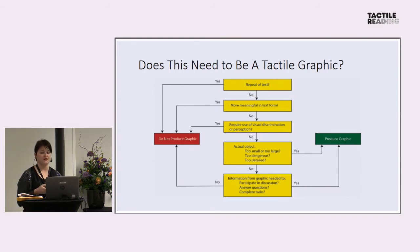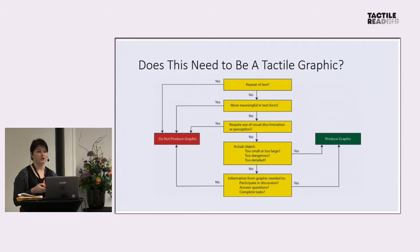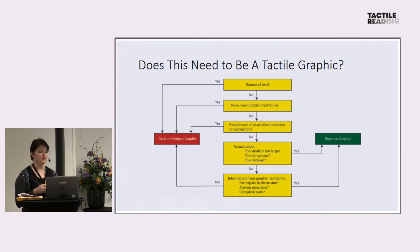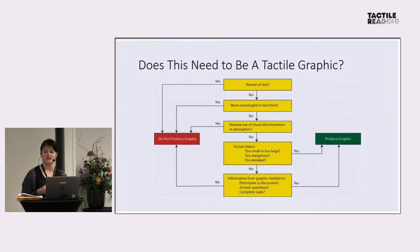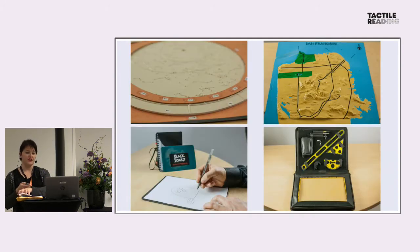There is a great flowchart from the Braille Authority of North America's guidelines and standards for tactile graphics. Not everything that appears as a graphic needs to be repeated as a tactile graphic. If the image repeats the text, is more meaningful in text form, or requires visual discrimination, perhaps you shouldn't produce a tactile graphic. However, if the actual object is too small, too large, too detailed, or too dangerous to handle directly, or if information from the graphic is needed to participate in discussion, complete tasks, or answer questions, then you definitely need to produce one.